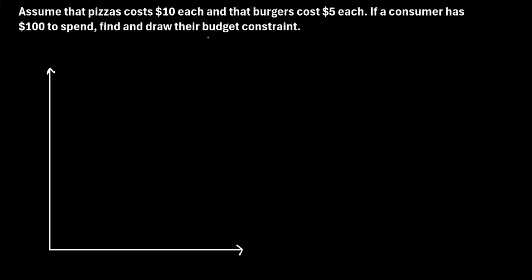Here's the idea with a budget constraint. We have a certain amount of money that we can spend — our budget of $100 — and we want to know every combination of the quantity of pizzas and burgers that we could buy based on this budget. The way we draw this budget constraint is pretty simple.